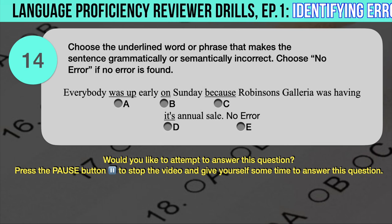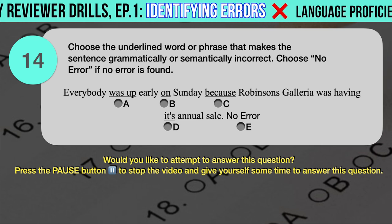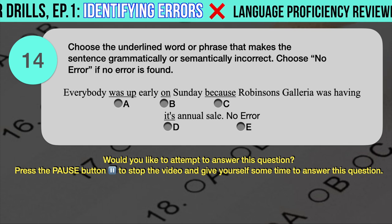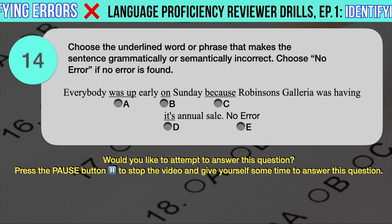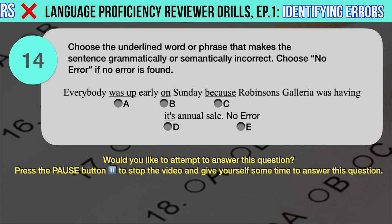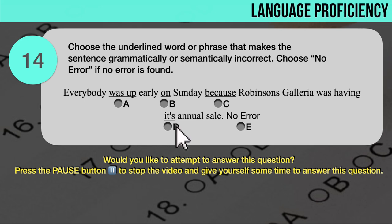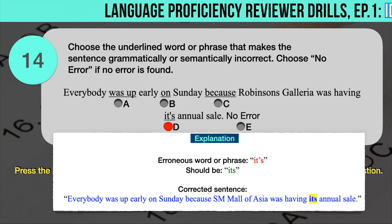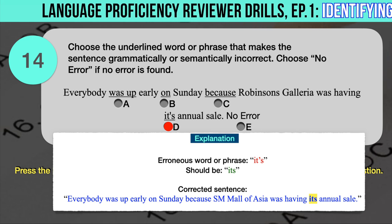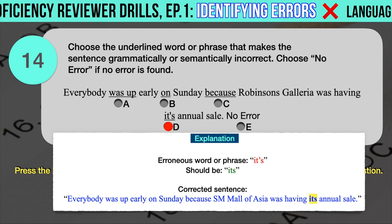Drill question number 14. 'Everybody was up early on Sunday because Robinson's Galleria was having its annual sale.' The underlined words are: A. Was up, B. On, C. Because, D. It's. The correct answer is D. The erroneous word is 'it's' (contraction of 'it is') — it should have been 'its' (possessive pronoun, without apostrophe). 'It's' with apostrophe is a contraction of 'it is,' whereas the correct word here is the possessive pronoun 'its' without apostrophe.